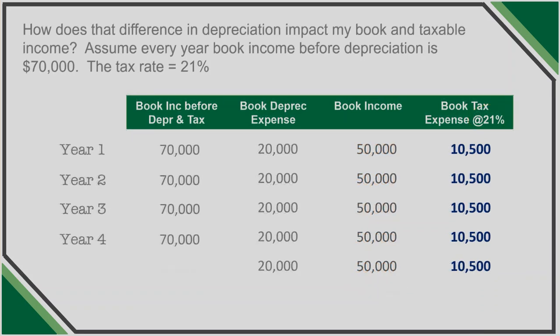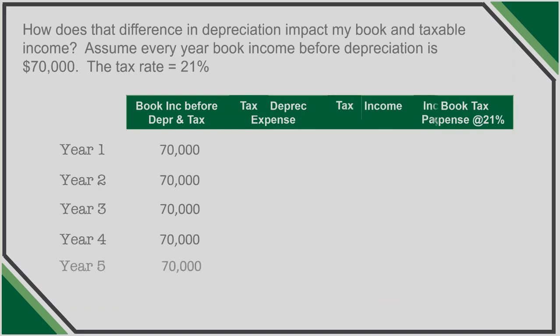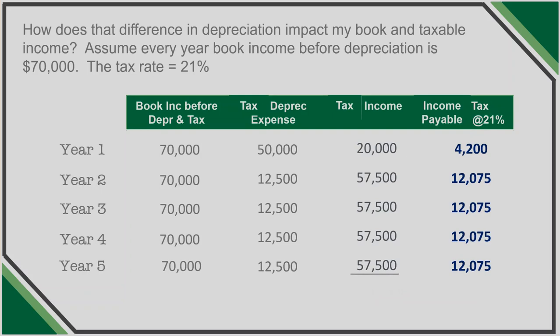Using the same book income amounts, what is taxable income after depreciation? Taking into account our computed depreciation expense, taxable income in year one is only $20,000, not the $50,000 recorded for book. In years two through five, taxable income is $57,500 — more than book. Even though book income varies from taxable income each year, over the five-year period book income and taxable income computed will be exactly the same: a total of $250,000. Differences on a year-by-year basis are merely temporary and eventually even out.